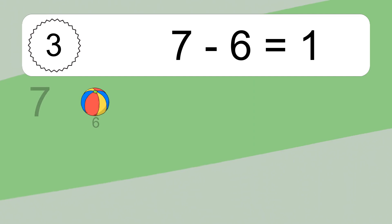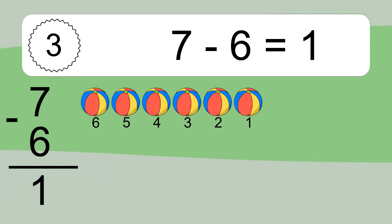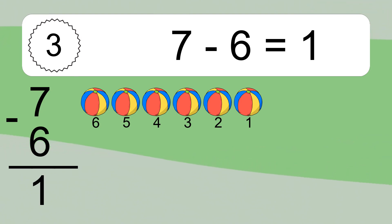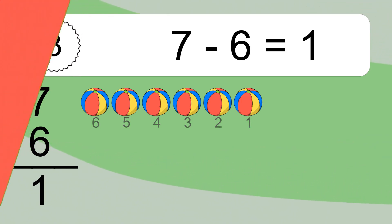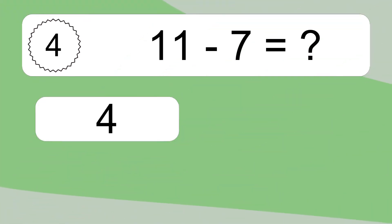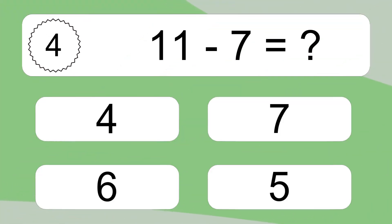7 minus 6 equals what? 7 minus 6 equals 1. Let's count it! 6, 5, 4, 3, 2, 1.